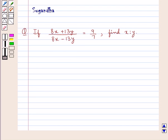Hello and welcome to the session. In this session we discuss the following question: If 8x plus 13y upon 8x minus 13y is equal to 9 upon 7, find x is to y.